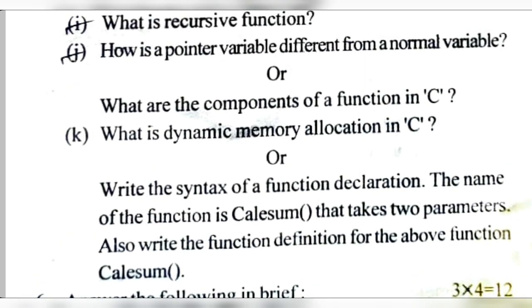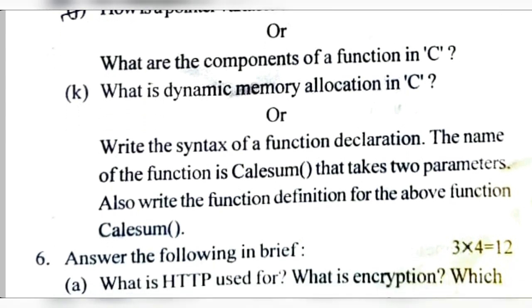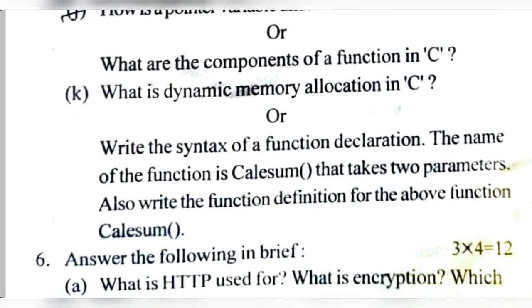What are the components of a function in C? The components of a function are: return type, function name, and arguments inside the brackets. What is dynamic memory allocation? This is a class 9 topic — it is a library function which allocates memory spaces when the program is executing.